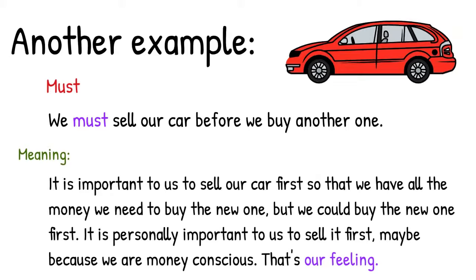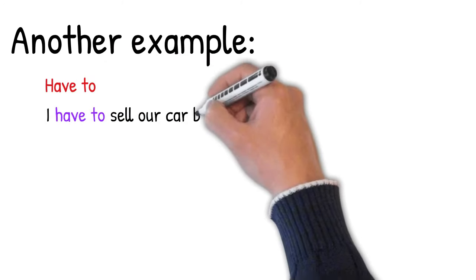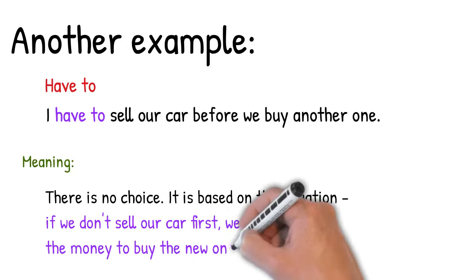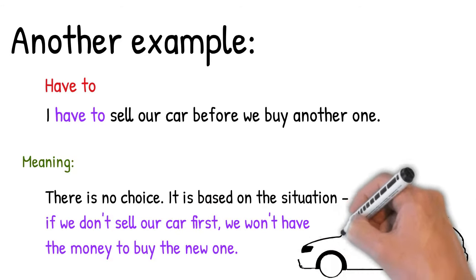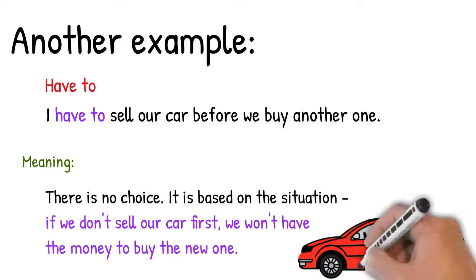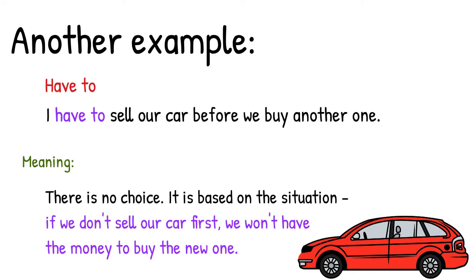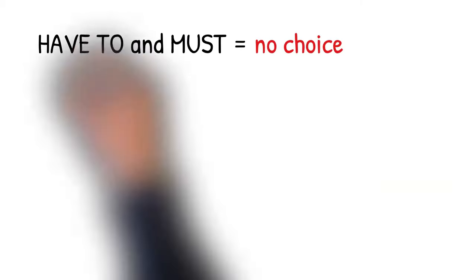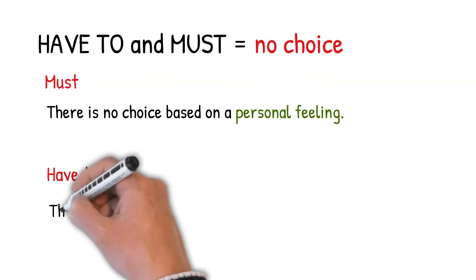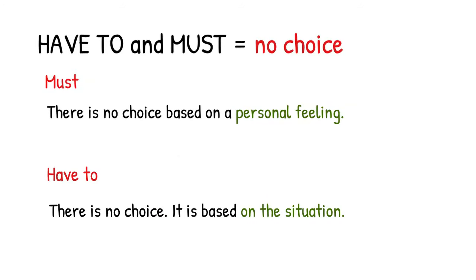We want to sell our car first, maybe because we are money-conscious — that's our personal feeling, our personal choice. But with have to, it's not our personal choice; it's based on the situation. 'We have to sell our car before we buy another one' — maybe we need the money from the first car to pay for the second one. If we don't sell it, we won't have enough money. Both indicate no choice, but one is personal no-choice and the other is situational no-choice. So have to feels a little stronger.